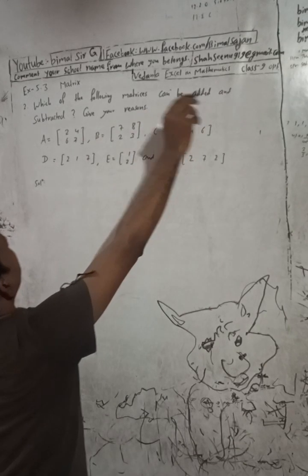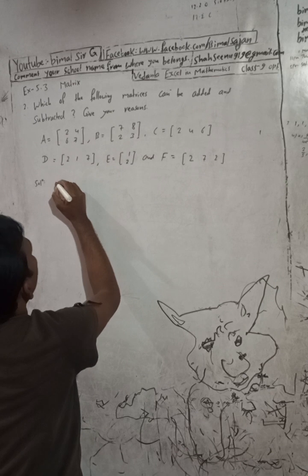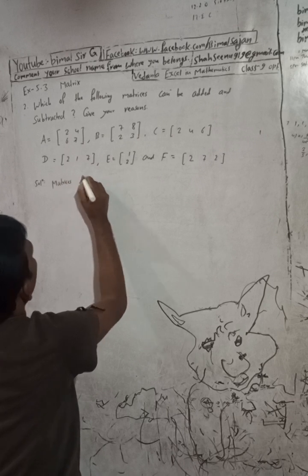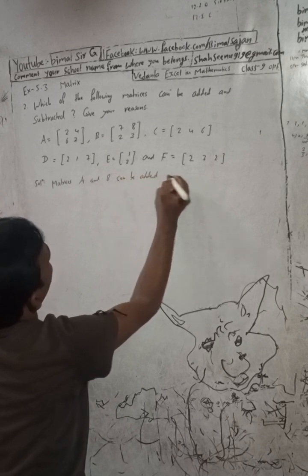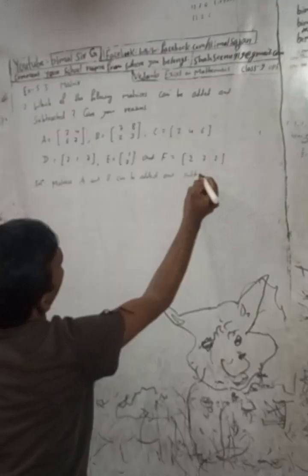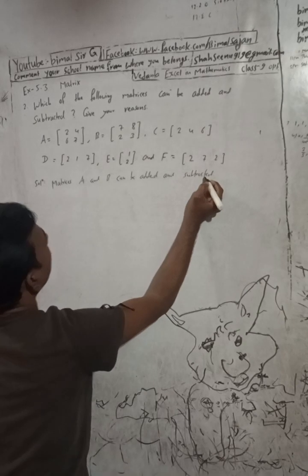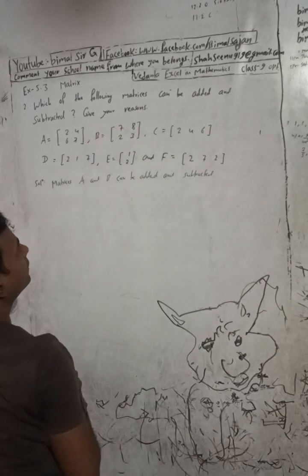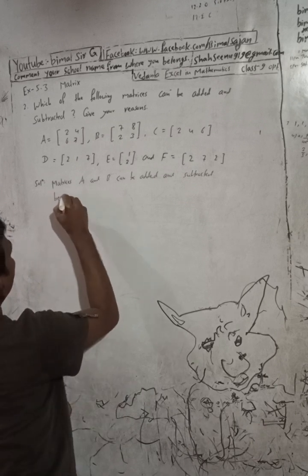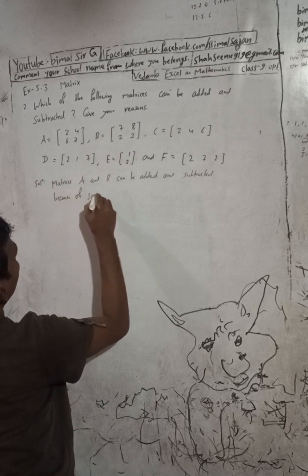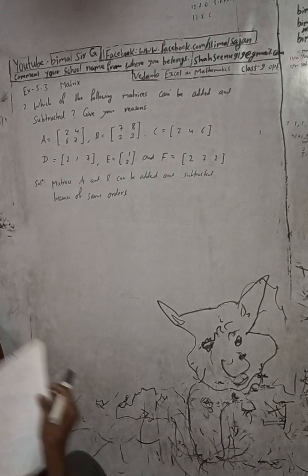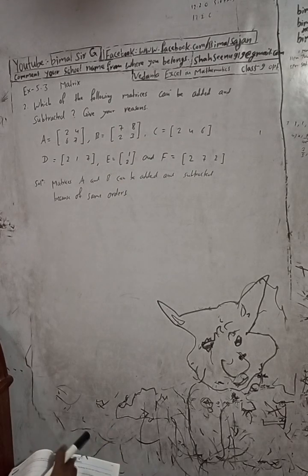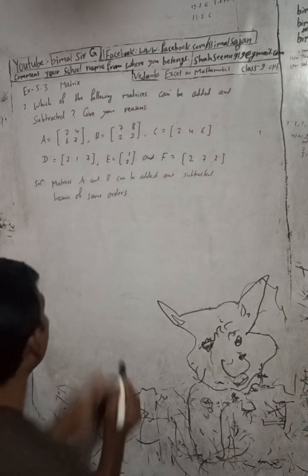Matrices A and B can be added and subtracted. Why? Because they are of the same order — equal orders. Both matrix A and matrix B have order 2×2, so they can be added and subtracted because of equal or same order.